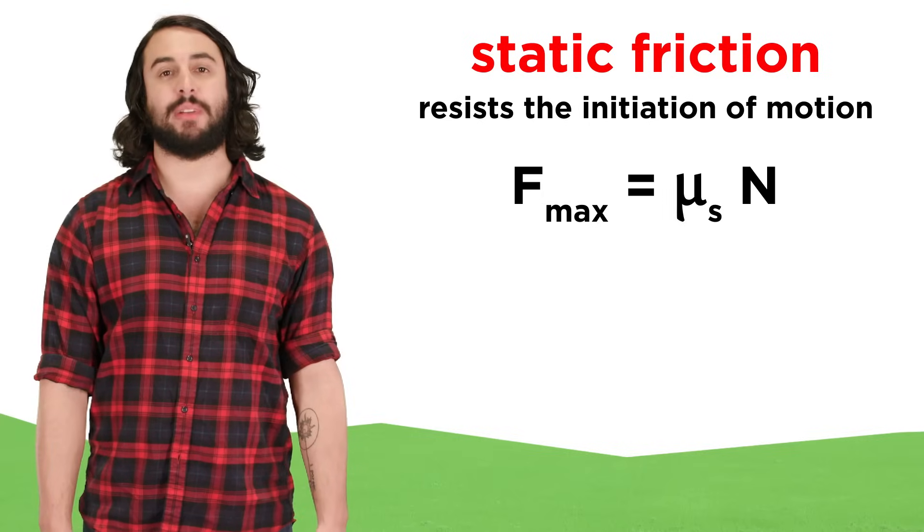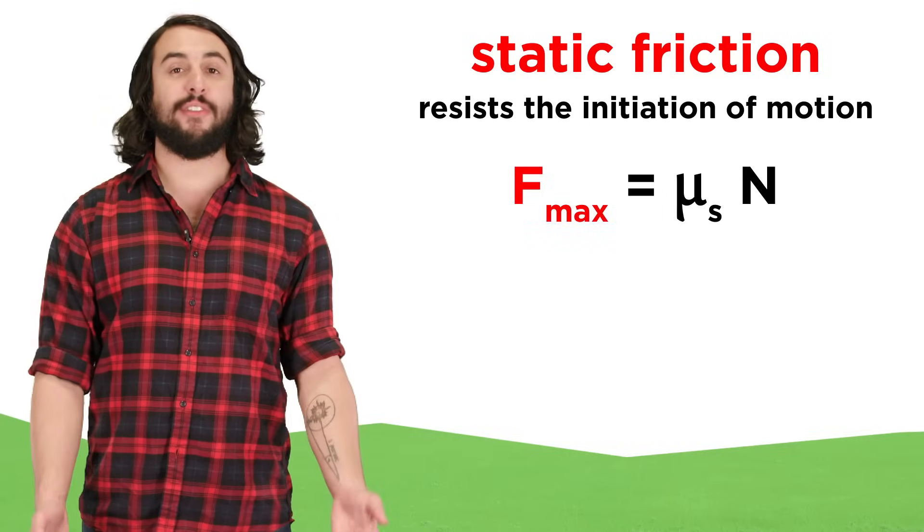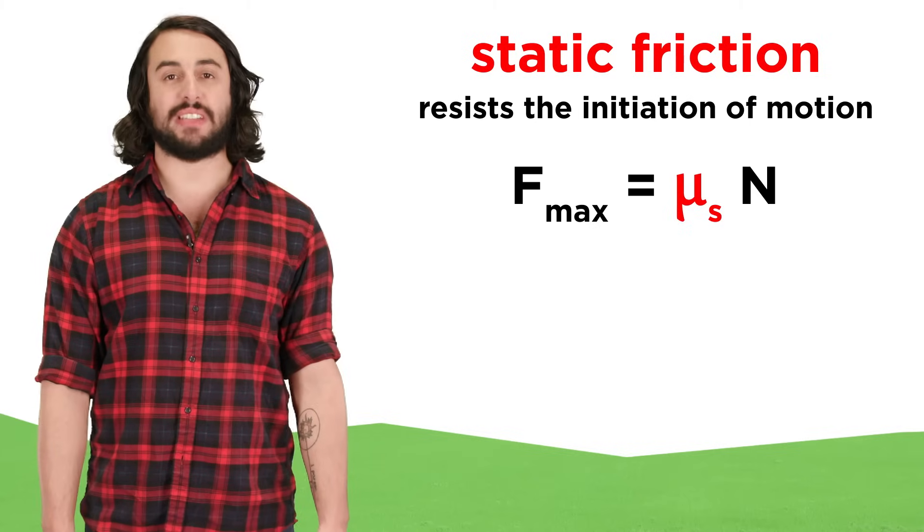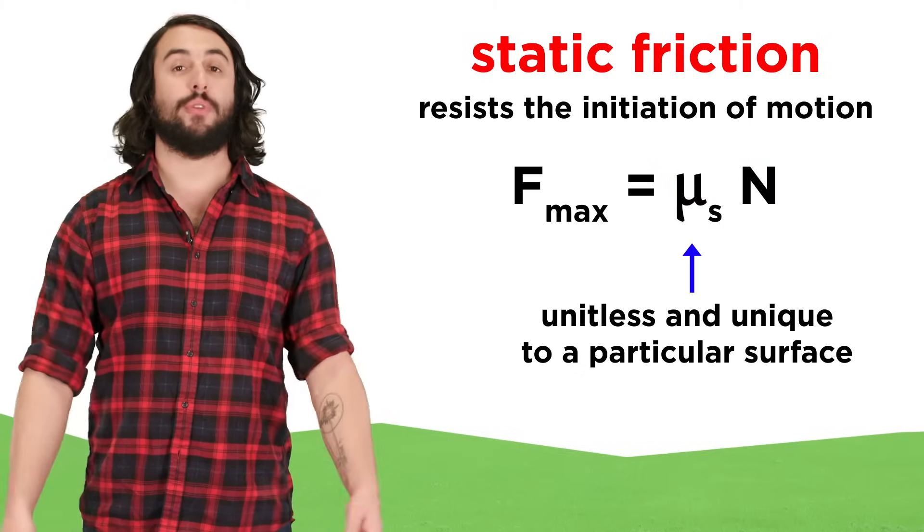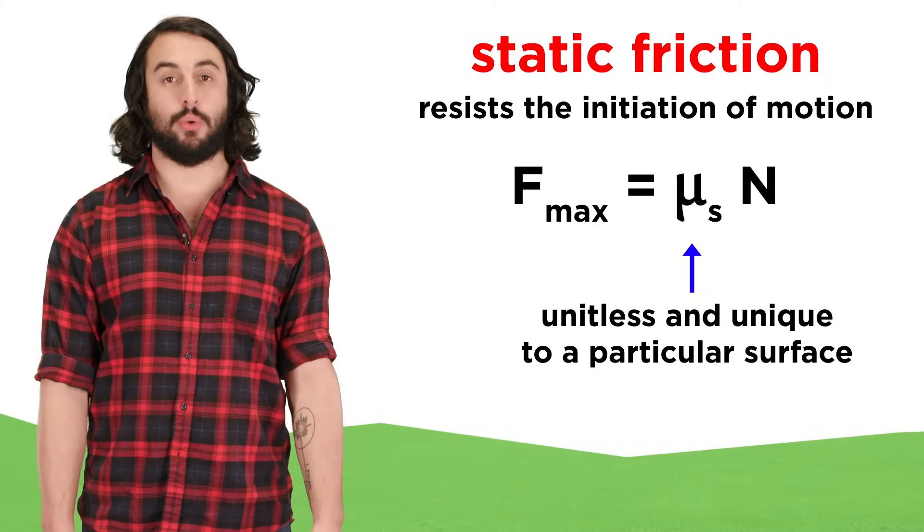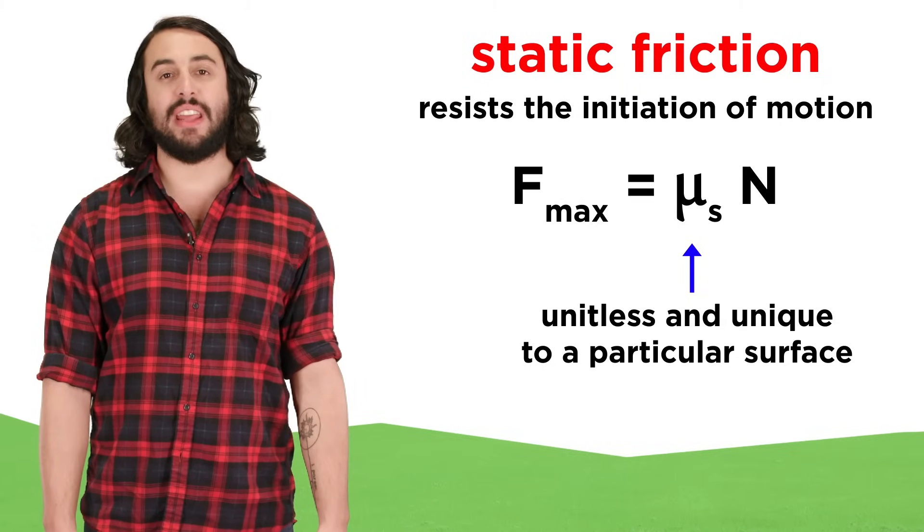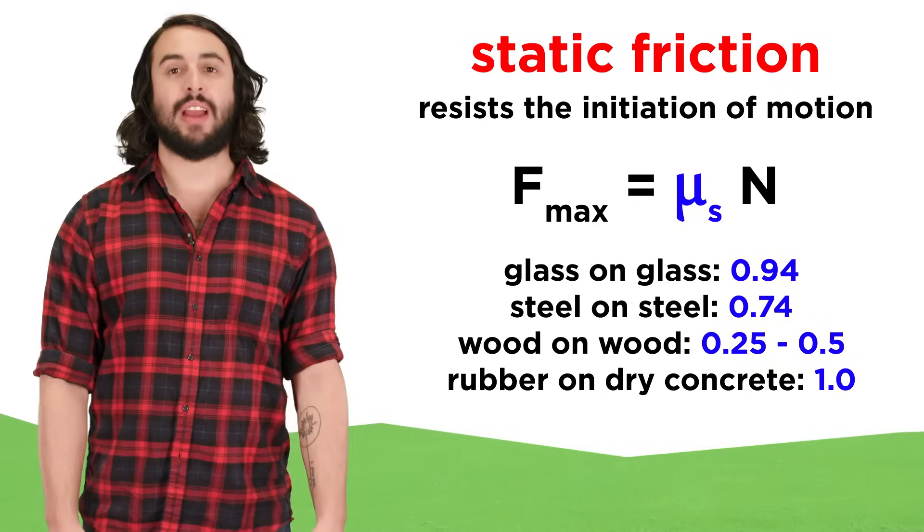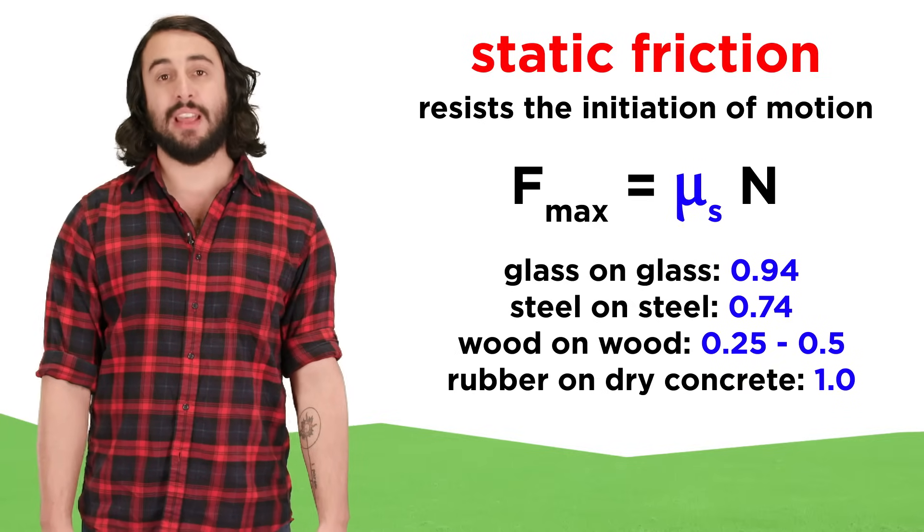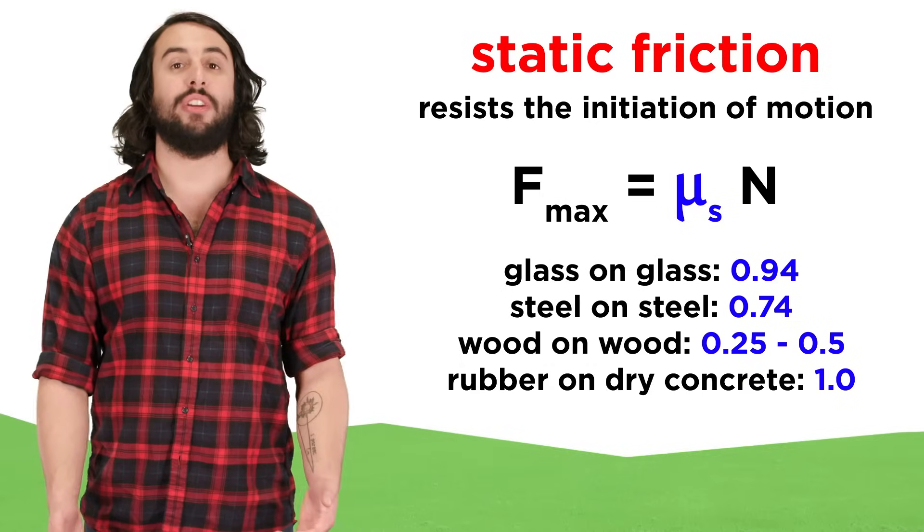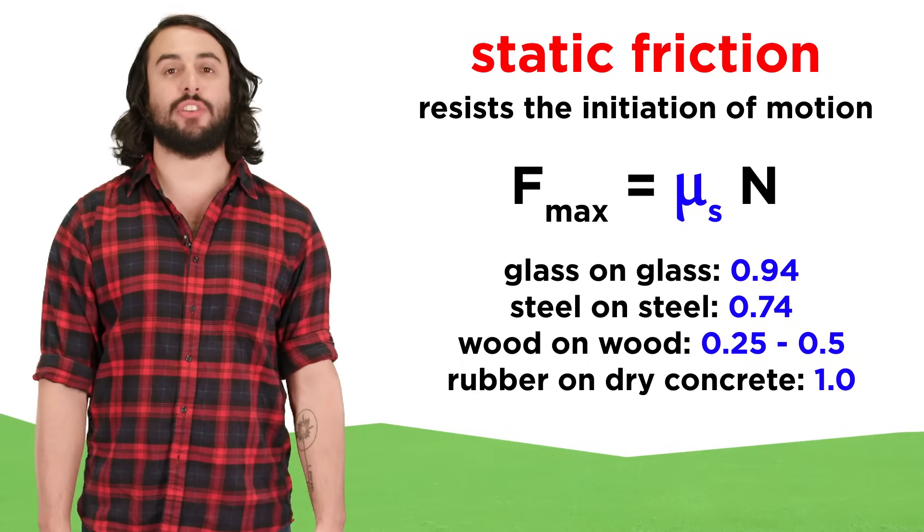The magnitude of this maximum can be calculated this way. F max is equal to the coefficient of static friction times the magnitude of the normal force. This coefficient, represented by the Greek letter mu, is unitless and unique to the surface in question, and we have tabulated these coefficients for a variety of common surfaces like glass, steel, wood, and rubber, and the various combinations thereof.